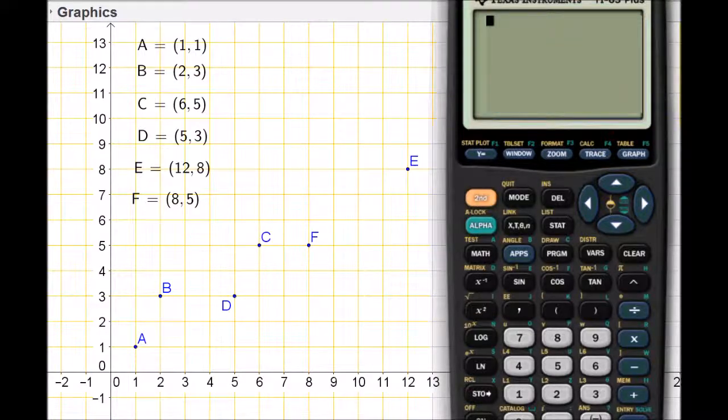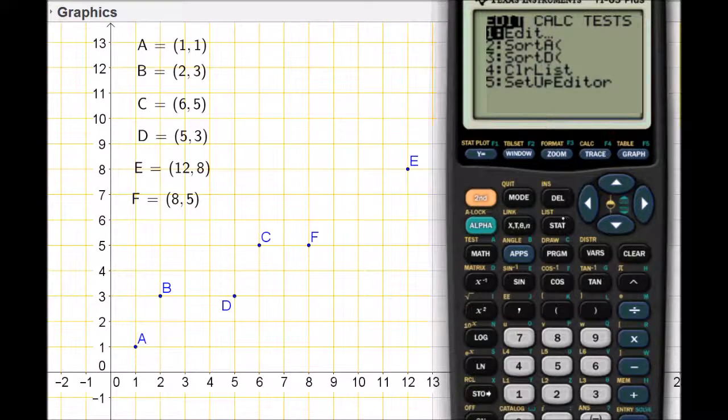The first thing we need to be able to do with our calculator is enter the data. To enter the data in our calculator, we're going to be using the stats button, right here near the arrow keys. I'm going to press STAT. You can see I have options to edit my data, to perform calculations, and to run statistical tests. Right now, we're going to begin by editing the data.